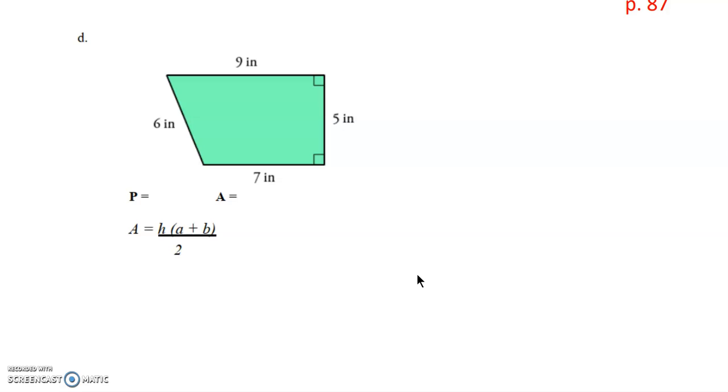For D, we can see that we have parallel sides. The 7 and the 9 are the parallel sides. They will never cross. So those are our bases. And the height is shown where there is the right angle. So the height here is 5 inches.